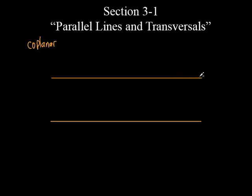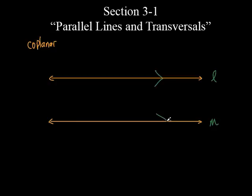A lot of times you'll see arrows on the ends of lines; sometimes they don't put them. It doesn't necessarily mean it's a line segment. To show graphically that these lines are parallel, let's call them line L and line M. What we do is put an arrow inside each of the two lines, pretty close to each other at roughly the same spot on the line. So if I just showed you this picture with this arrow on line L and this arrow on line M, that automatically means those two lines are parallel.